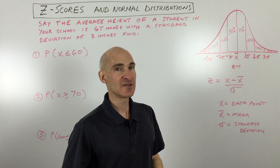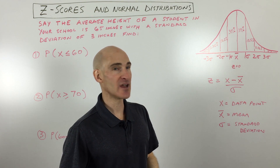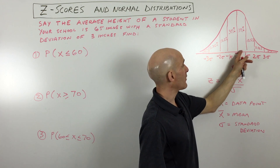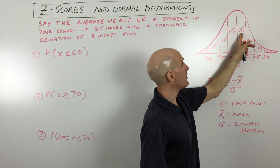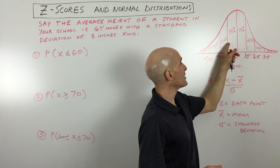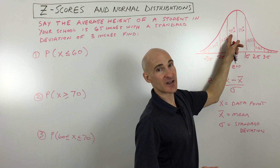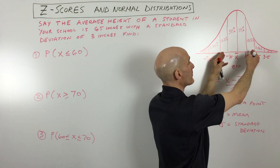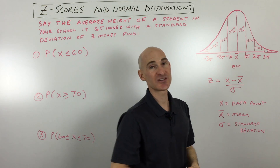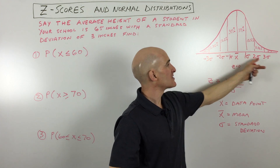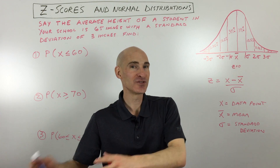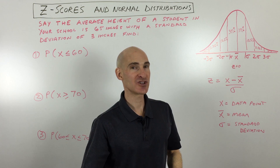If you look at the standard deviations of your data set, if you go one standard deviation to the right of the mean — above the mean — you can see that will encompass 34% of the data. Or if you go one standard deviation below the mean, that's 34% of the data. So one standard deviation either side of the mean encompasses 68% of the data. But sometimes it doesn't always work out where you're dealing with exact multiples of standard deviations — like one or two standard deviations.